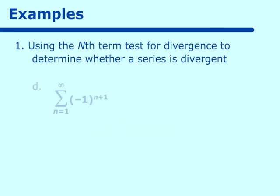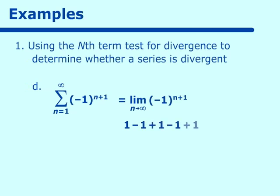Suppose we have negative 1 to the n plus 1 that we are summing. If we take the limit as n approaches infinity of negative 1 to the n plus 1, starting with n equals 1 we get 1 squared which is 1; n equals 2 gives negative 1 cubed which is negative 1; and so on: plus 1, minus 1. They do not cancel out — we cannot determine a definite answer. So this one is divergent.